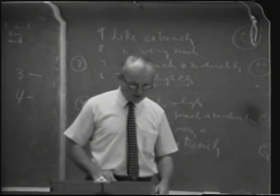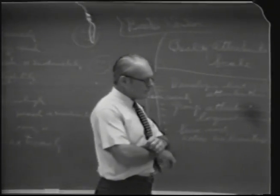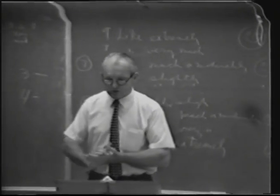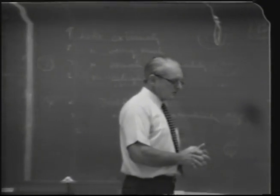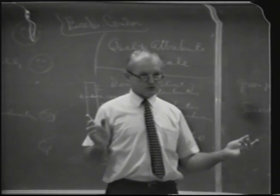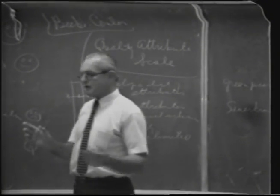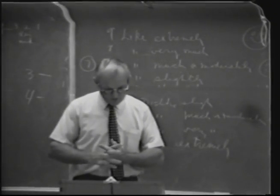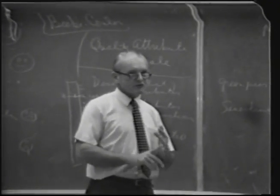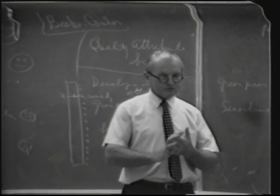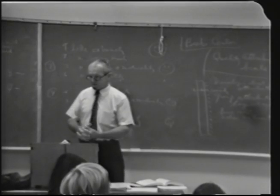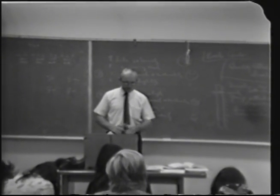One way to make hedonic scorecards more meaningful when looking for small differences — for example, whether half butter and half margarine differs from all butter — is to give a triangular test first to find out if judges can detect any difference at all. If they can find a difference, the hedonic readings will be more reliable, for two reasons: they've had training in the samples, and they have confidence that a difference exists. By preceding certain hedonic scorecards with the triangular taste test, the panel reacts better to the hedonic scoring.